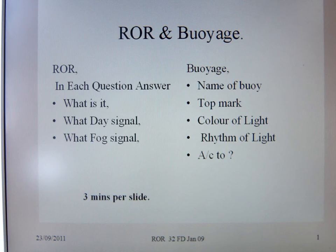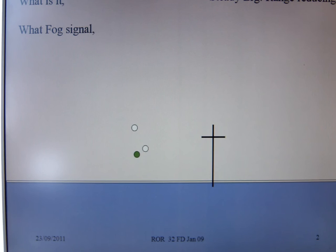On the buoyage, I've just put a couple of buoys together. Name the buoy, what is the top mark, the colour of the light, and the rhythm of the light. So you see it right ahead, what action would you take? And I'm sorry about the background noise. I hope that you can hear this okay.